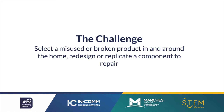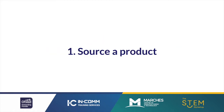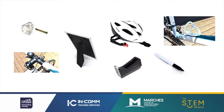The challenge linked to Hexagon is to select a misused or broken product in and around the home, and redesign or replicate a component to repair it. Look in and around the home for products that are in need of repair. Here are some examples of products we sourced from in and around the home which have missing or broken parts. The product we are going to select as an example for this challenge is the tape dispenser. We are going to design and manufacture a spool for the tape dispenser that is currently not in use due to that missing part.